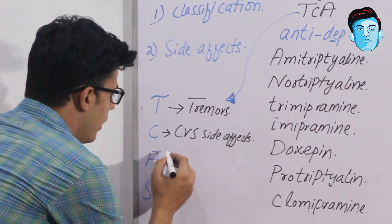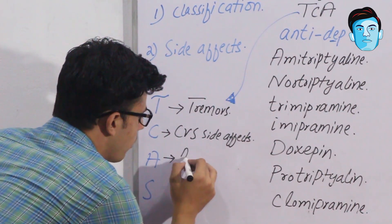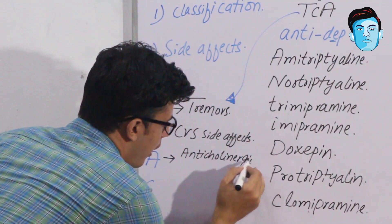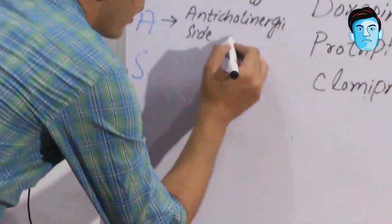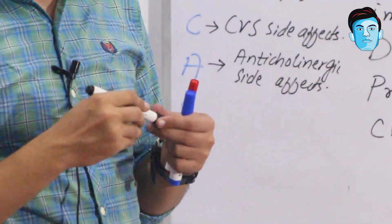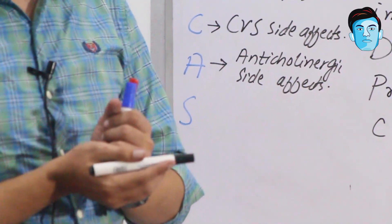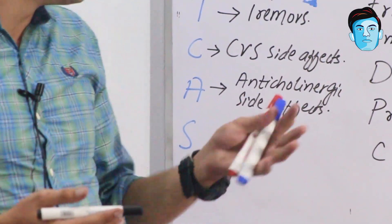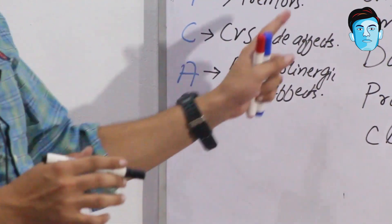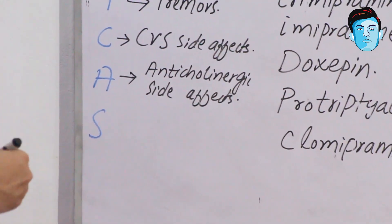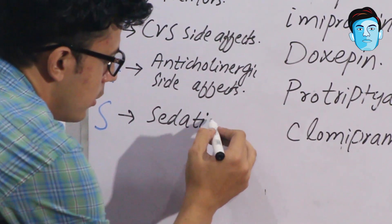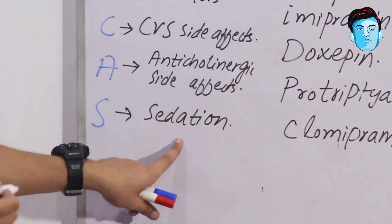A stands for anticholinergic side effects, which include dry mouth, dysphagia, urinary retention, and constipation. S stands for sedation. So the side effects of tricyclic antidepressants, using the mnemonic TCAS, are: tremors, cardiovascular effects (ischemic heart disease), anticholinergic effects, and sedation.